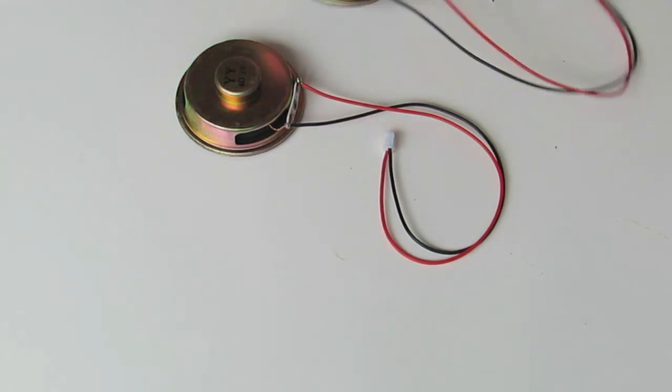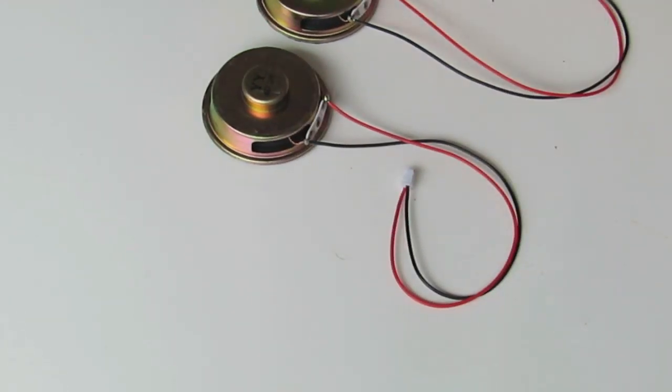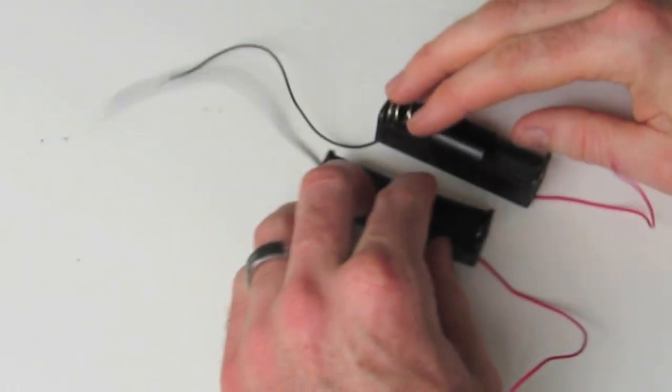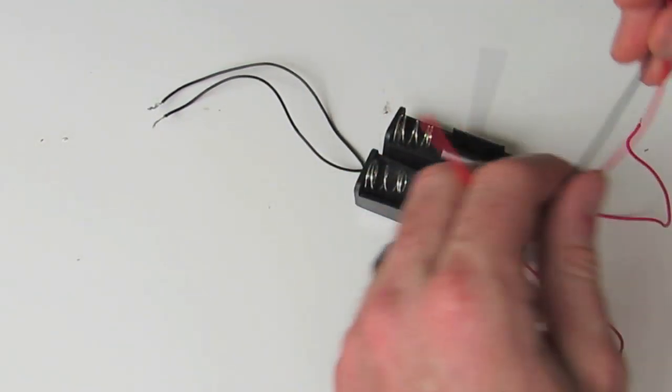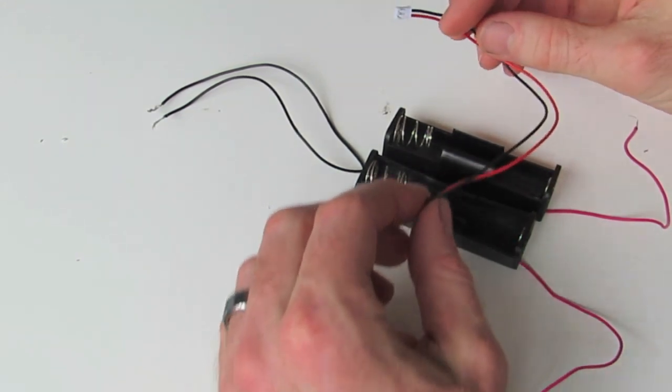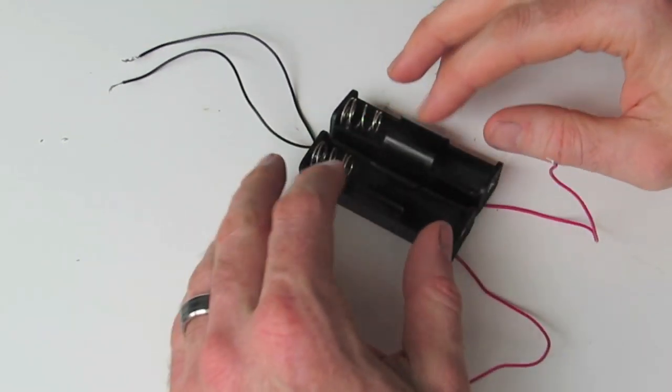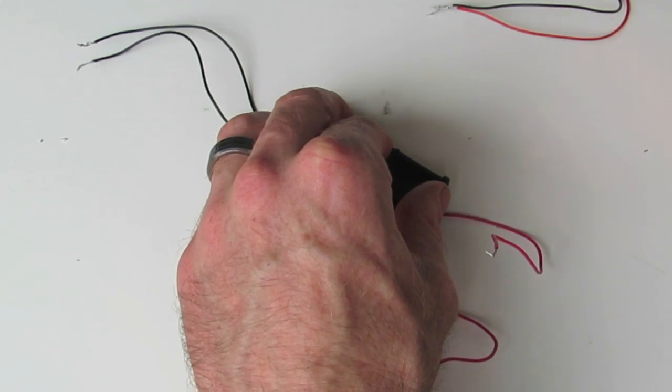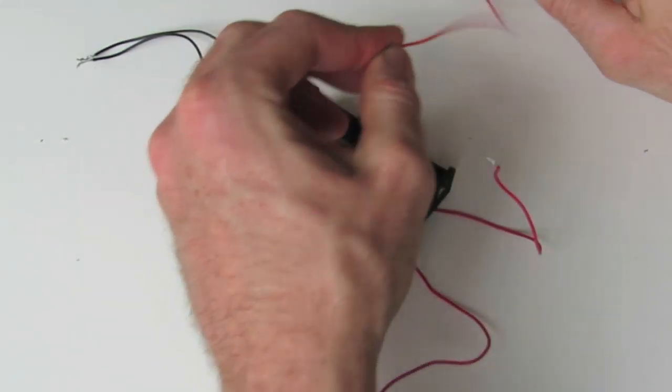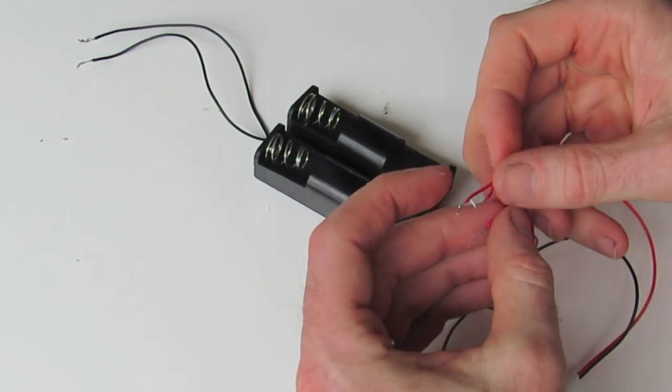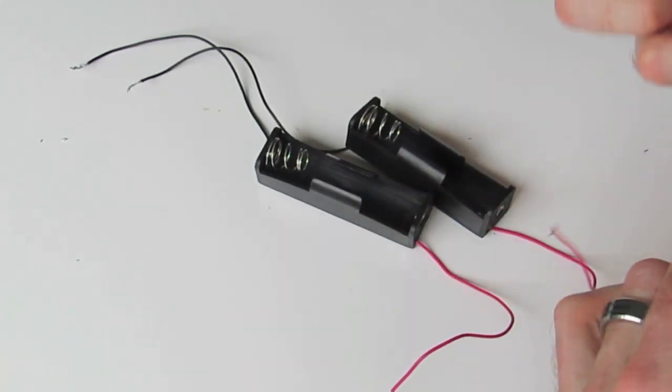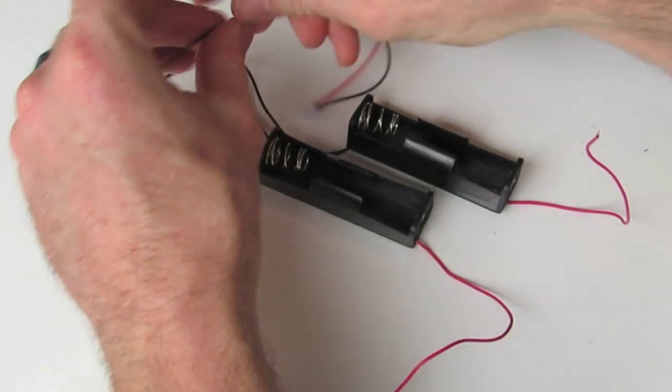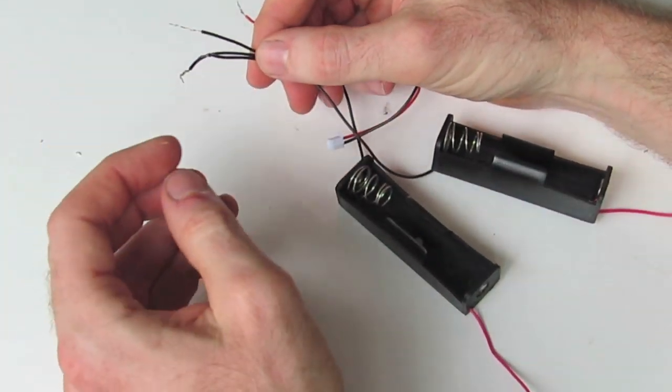So we need to do the same for our other speaker, I've already done that earlier, so we've got our two speakers all connected and ready to go. Likewise, we need to take our battery holders and our cable and attach the terminal cable to our battery holders. Now these two batteries are connected in parallel, enabling us to keep our 3.7V which the batteries provide. So in doing that, all we have to make sure is that all our three red wires are twisted together and likewise all our three black wires are twisted together as well, joined together.